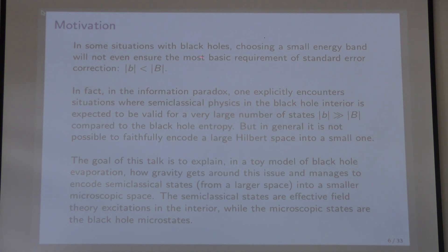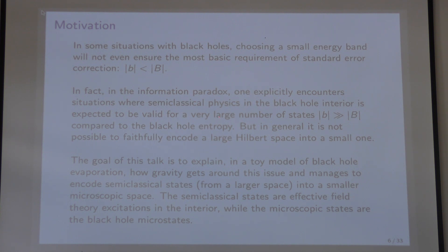This usually ensures that there are enough states in H_b to encode all of H_B in a useful manner. But in some situations with black holes, choosing a small energy band will not even ensure the most basic requirement of standard error correction. The most basic requirement is that the dimension of H_b should be less than or equal to H_B. In the information paradox, one explicitly encounters situations where semi-classical physics in the black hole interior is expected to be valid for a very large number of states — H_b much greater than H_B. But in general, it's not possible to faithfully encode a large Hilbert space into a small one.